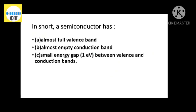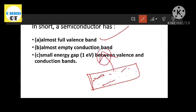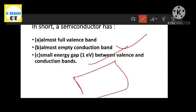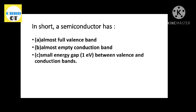In short, for a semiconductor: the valence band is almost full, the conduction band is almost empty, and the energy gap is small — about 1 electron volt. Compare this to an insulator at 15 electron volts and a conductor at 0 electron volts.